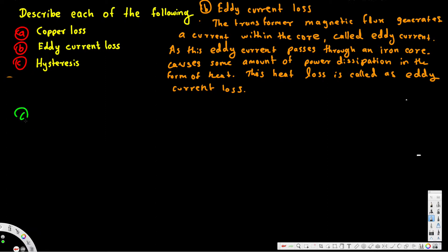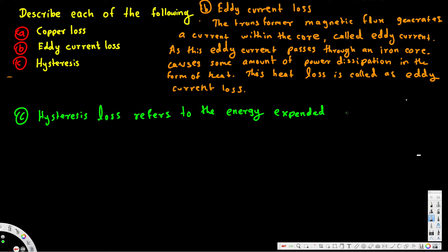Okay, here we go — Part C is asking what is hysteresis. Hysteresis loss refers to the energy expended to overcome the core retentivity. Retentivity is the ability of a material to retain its magnetic characteristics after the magnetizing force has been removed.